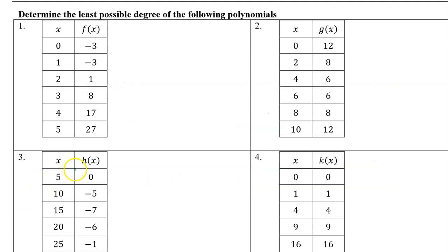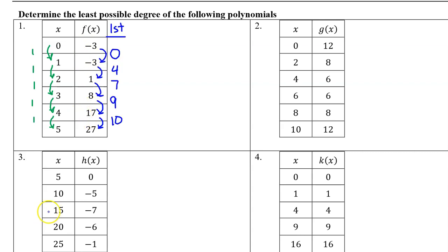For the next few problems, we will use tables to determine the least possible degree of each polynomial. When the input values share a common difference, you can use a trick to find the degree of a polynomial based on a table of values. Find the differences in the output values — we call these the first differences. If the first difference is constant, then it is a degree 1 polynomial. If the second difference is constant, then it's degree 2. If the third difference is constant, then it's degree 3, and so on.